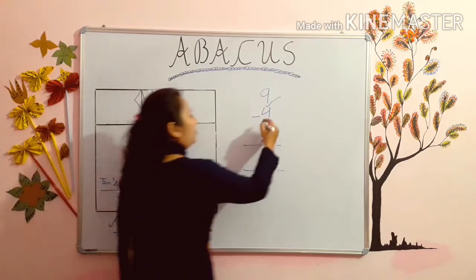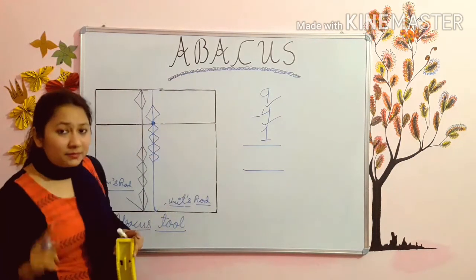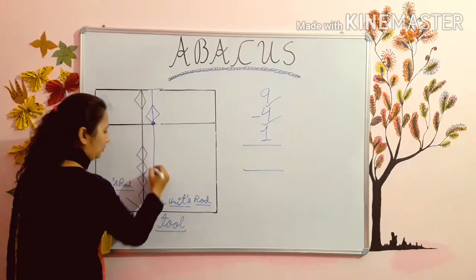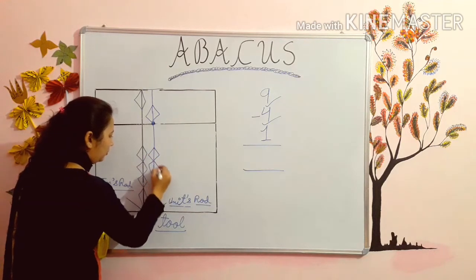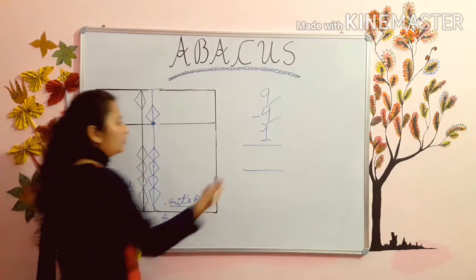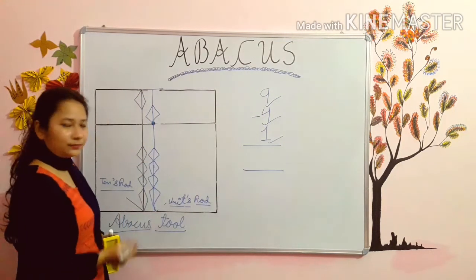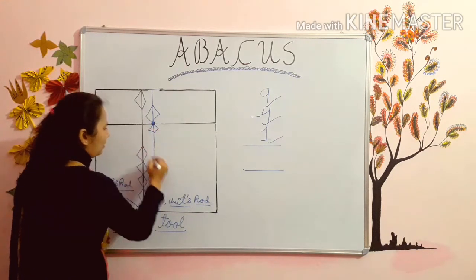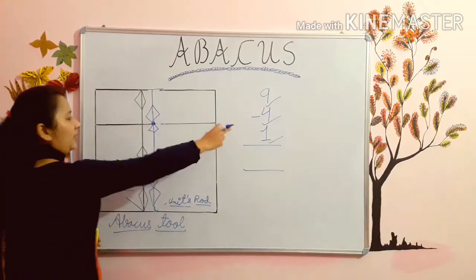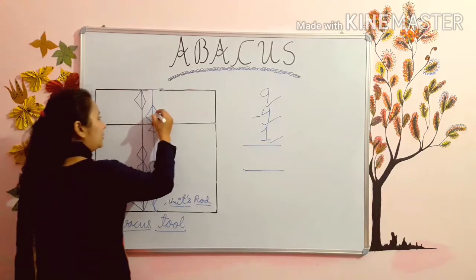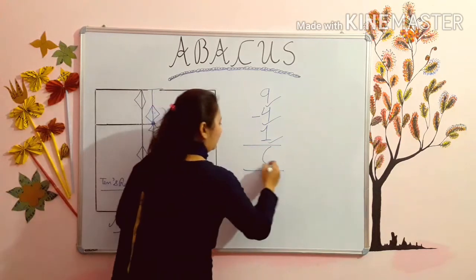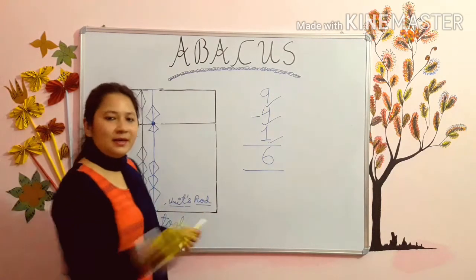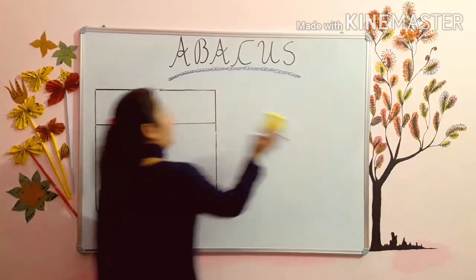Now we have to minus 4. Minus means down — put these 4 down. 1, 2, 3, 4. Now you have to add 1. Add means up. We have added 1. Now what is your answer? 5, 6. Are you getting kids? Now we will move to our next sum which is on whiteboard only, and after that sum we will do the sums on abacus tool.